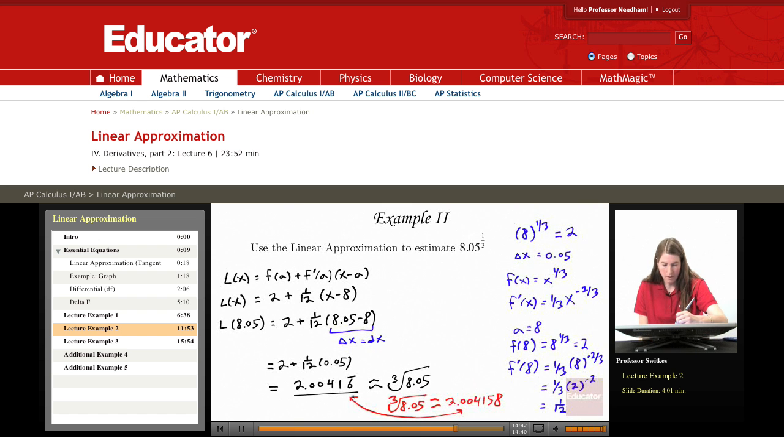And to conclude this example, I want to just briefly look at things graphically here as well. Cubed root of x has a graph that looks something like this for positive x values, which is the region that we care about here. It continues back like this as well.